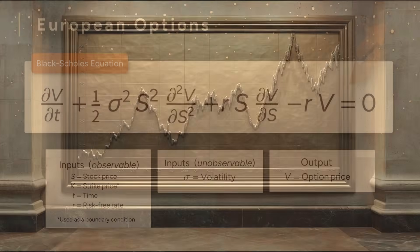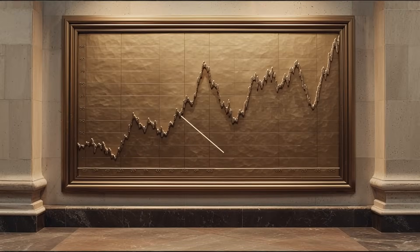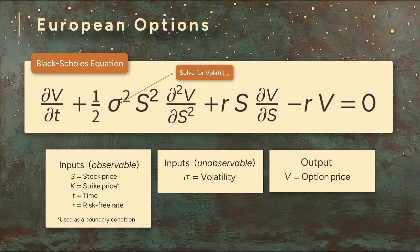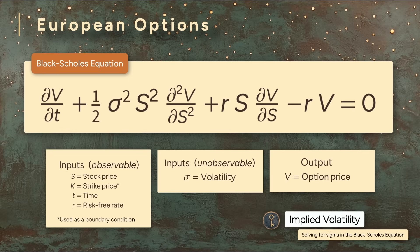The market is constantly providing us with a price for every option. We can simply take that price and plug it back into the Black-Scholes formula. We then numerically solve for the volatility that gives us that exact market price. We call the result the implied volatility. It's the volatility the market is implying by the price it has set.